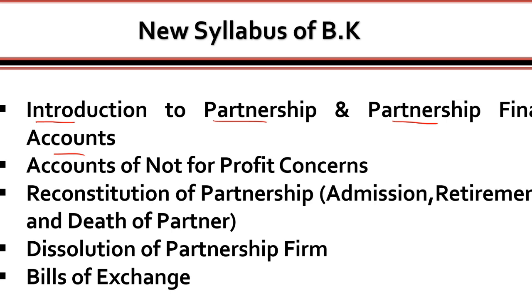The second chapter is Accounts of Not-for-Profit Organizations, also called NPOs. These are organizations not doing business for profit — such as non-government organizations, social welfare, and social work organizations. We will study how these organizations make their accounts — it is a very interesting chapter.